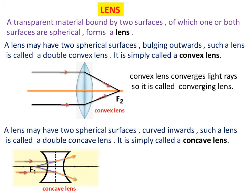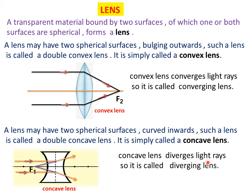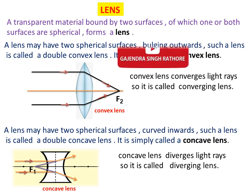Another type of lens may have two spherical surfaces curved inwards. Such a lens is called a double concave lens, or simply a concave lens. It is thicker at the edges than at the middle. A concave lens diverges light rays, so it is called a diverging lens.